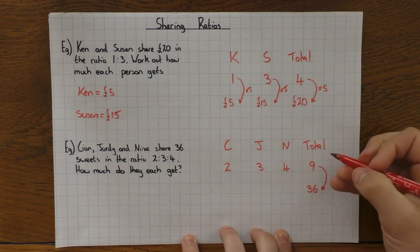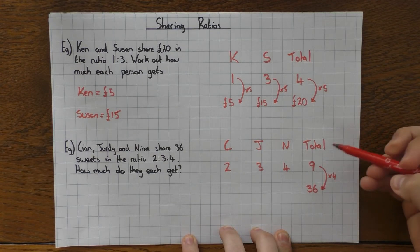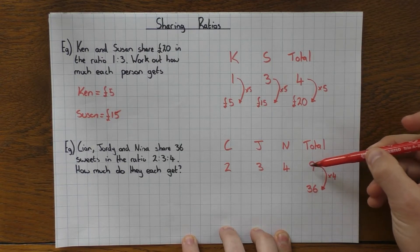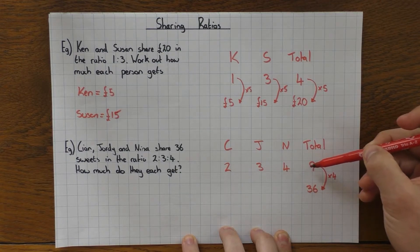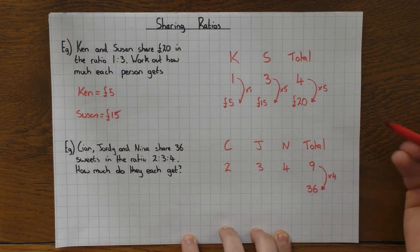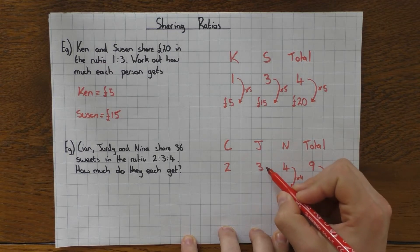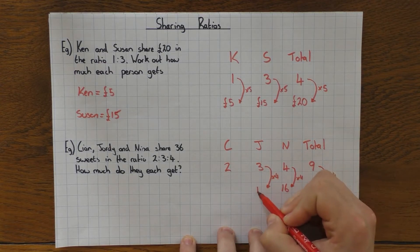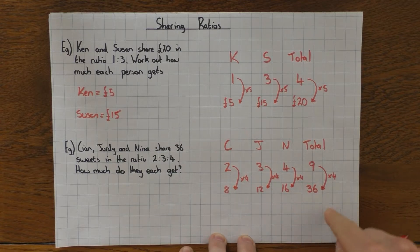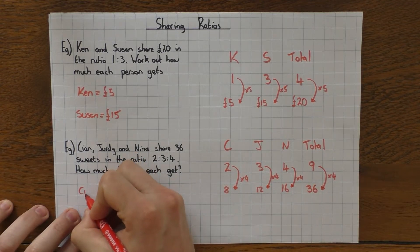So I'm going to write 36 there. And again I need to work out what do I times 9 by to get to 36. Now obviously this is quite a nice one—I'm just going to times by 4. But if it wasn't very nice, the way to work that out is just go the other way. So if you were unsure about that, just do 36 divided by 9, so 36 divided by 9 gets you 4. So we times by 4. I'm going to times all of these by 4, which leaves me with 16, 3 times 4 is 12, and 2 times 4 is 8. So 8, 12, 16—when you add them up you do get 36, so that's fine.